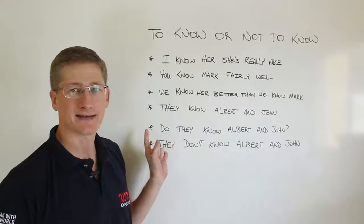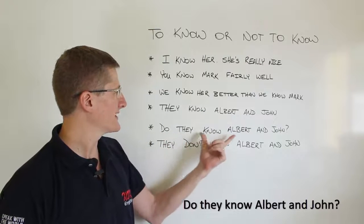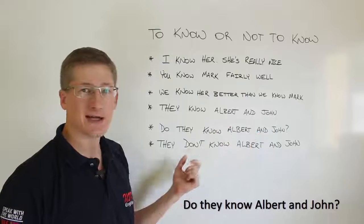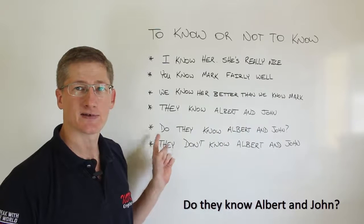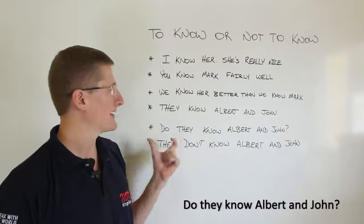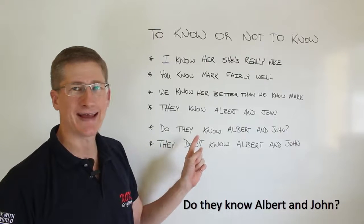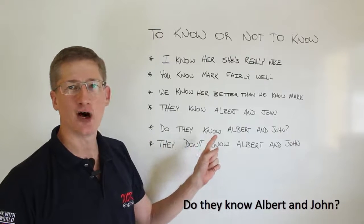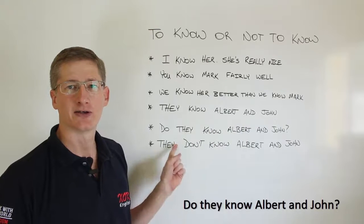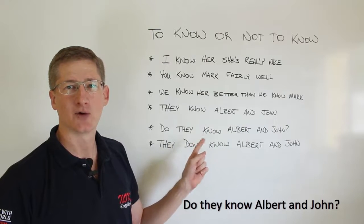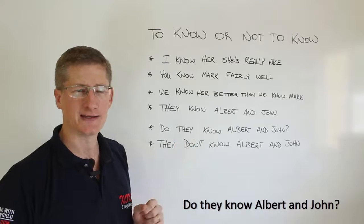Now let's look at that in the interrogative form. You notice: they know Albert and John — same sentence, the only difference is that we add 'do' as a question word. Do they know Albert and John?